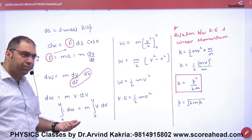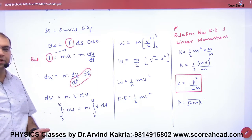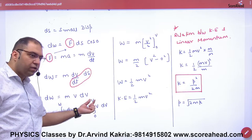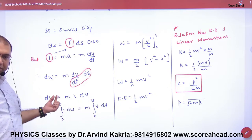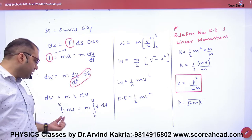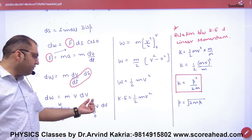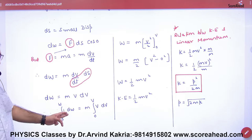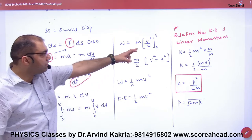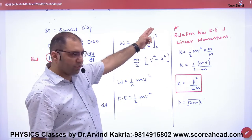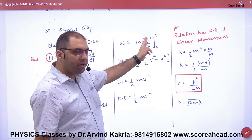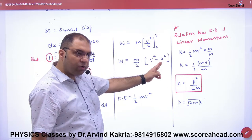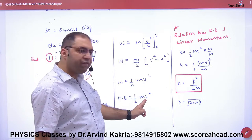We have changed the velocity from zero to V. So we integrate the work done W from zero to W as velocity goes from zero to V. This integration of m·V·dv gives m times V²/2, evaluated from 0 to V. This yields V² minus zero, giving the total work done equal to half m·V².